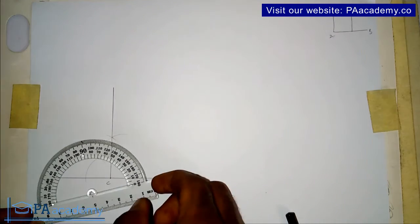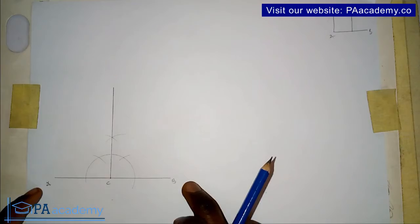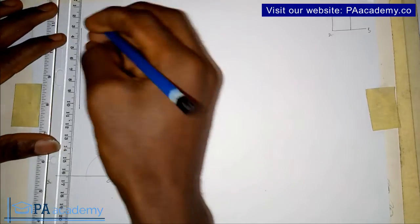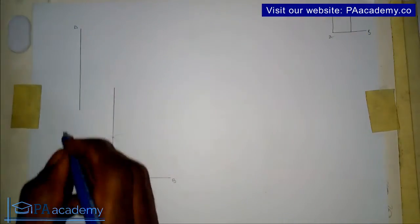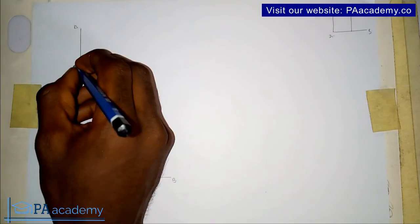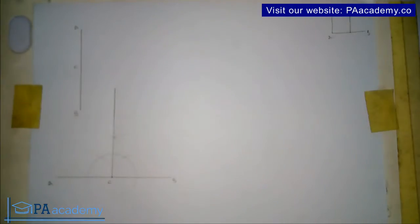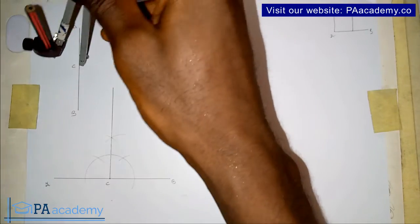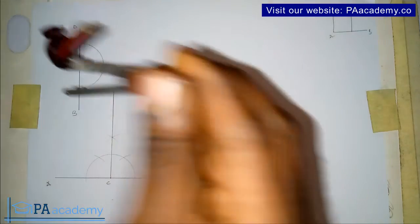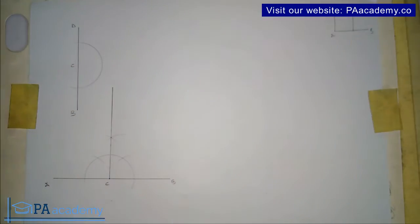Now before I move on — this line AB was horizontal. But even if you have a line that is vertical, with point A at one end, point B at the other, and you're asked to draw a line that is perpendicular to line AB from a point C, it's just the same steps. You bring in your compass, draw a semicircle on the line, and follow exactly the same steps to get the perpendicular.